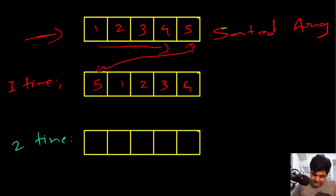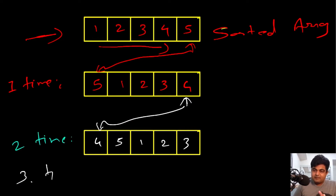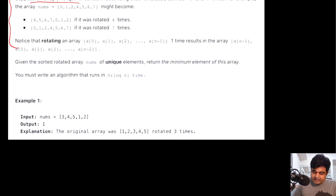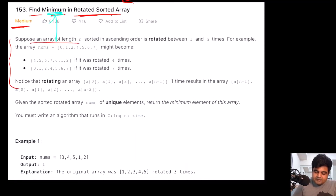If I rotate one more time — so the array has now been rotated two times — the result looks like this: the first two values are four and five, then we have one, two, and three. We can rotate it three times, four times, as many times as we want, up to five times since there are only five elements. In any rotated array, we need to find the minimum value present.